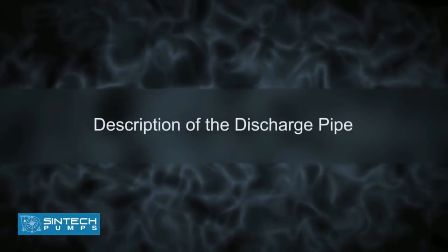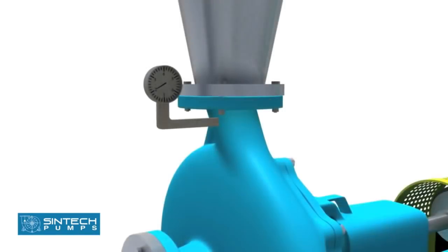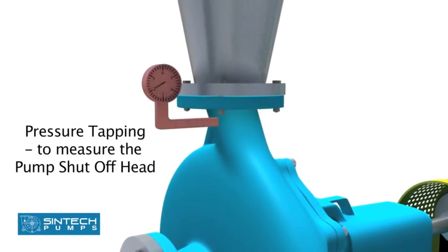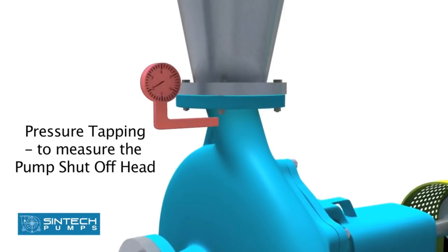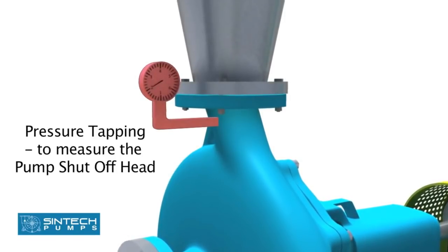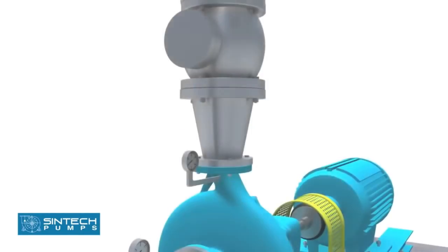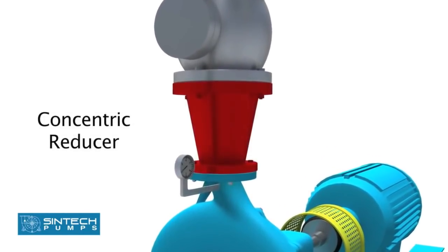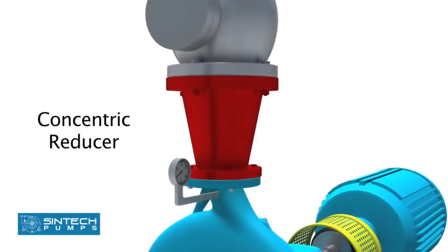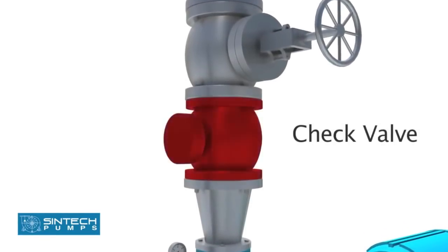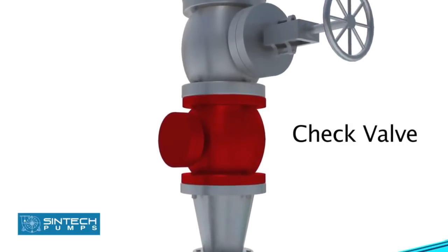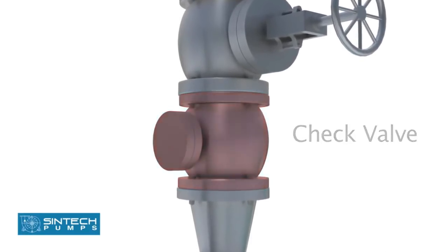Description of the discharge pipe: There should be a pressure tapping as close to the pump outlet and before the isolation valve as possible to measure the pump shut-off head. Concentric reducers are installed in the discharge pipe to minimize friction losses. The check valve used in the discharge should be of non-slam type to prevent hydraulic shocks.